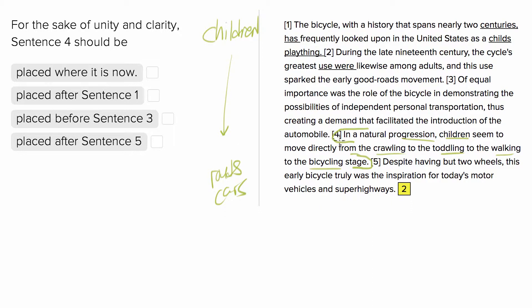Now when we're trying to decide where to put this sentence in this paragraph, the idea here is what you want to do is help the author build a logical argument or logical progression. So you want to ask yourself where in this paragraph is the author saying other things that relate to children, progression, and biking.